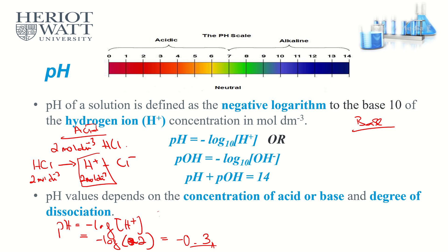Example — base calculation: I have 0.5 mol/dm³ of NaOH. NaOH is a strong base: NaOH → Na⁺ + OH⁻. Since it fully dissociates, [OH⁻] = 0.5 mol/dm³. Calculate pOH = −log(0.5) = 0.3. Then pH = 14 − 0.3 = 13.7. That's the final answer — 13.7, which is above 7, confirming it's a base.